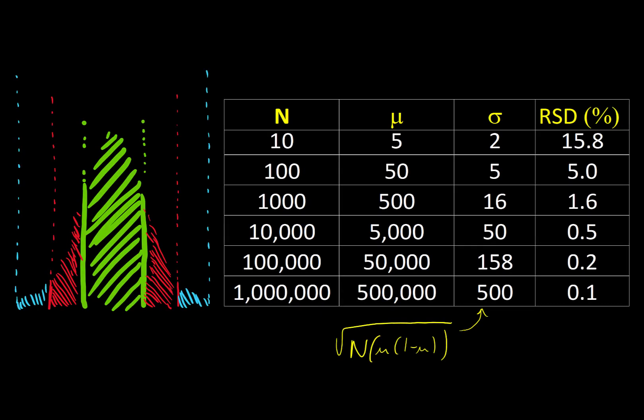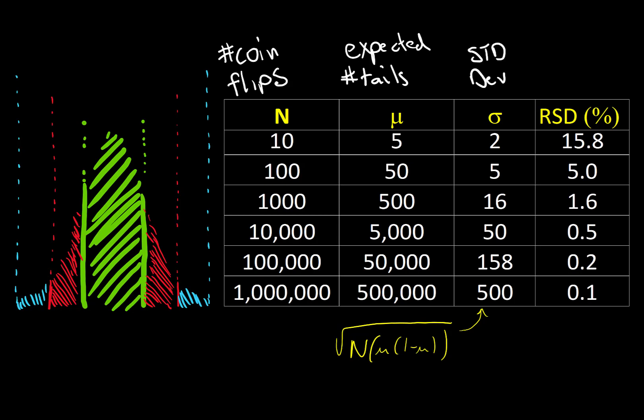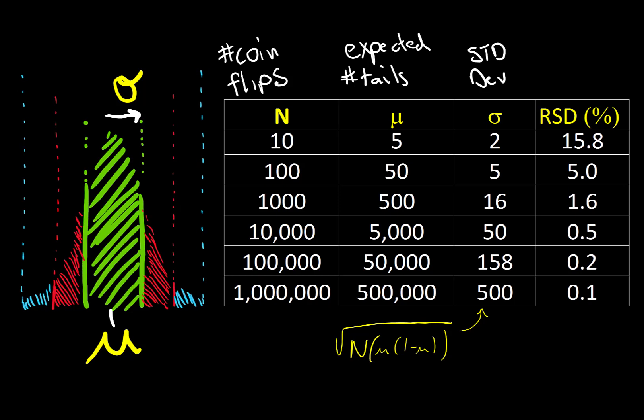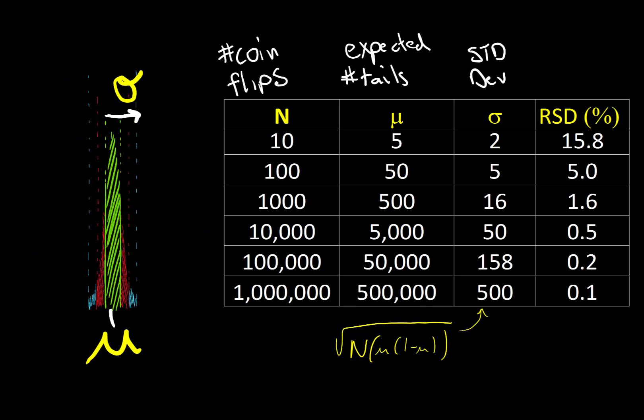This is purely theoretical data, but let's say we do this coin toss increasing the number of flips each time. The average will always be exactly half the number of flips — at least the theoretical average — and the standard deviation will be based on how many flips we do. You can see the standard deviation is getting larger, although the relative standard deviation is actually getting smaller, so the distribution is getting tighter and tighter towards the true expected value as the number of tosses increases.